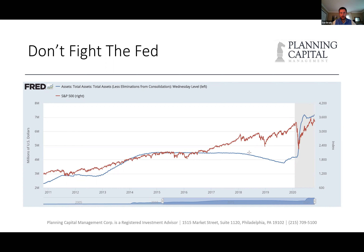When the Fed starts to taper — which you can see happened in late 2018 — the same thing happened to the market. We had a big correction at the end of 2018, from September through Christmas Eve. Rick and I were working that week trying to take advantage of that downturn, right up into Christmas Eve. That correction really was because the Fed started pulling dollars out.